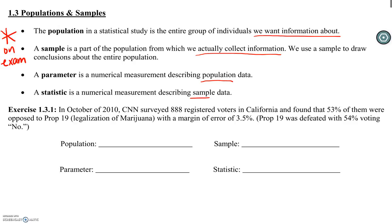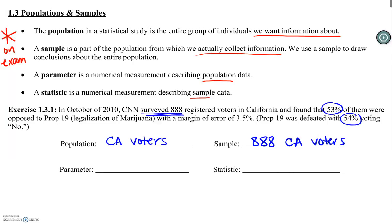Your population would have been California voters, because this was a California ballot measure. Our sample — CNN surveyed 888 California voters. We want to know about everyone; we're going to use these 888 voters to draw some conclusions. We have two different percents given: 53% and 54%. The 53% is in the same sentence as our sample, so that is our statistic — 53% of the 888 were opposed to Prop 19. The 54% is our parameter — that was the actual amount at the end.